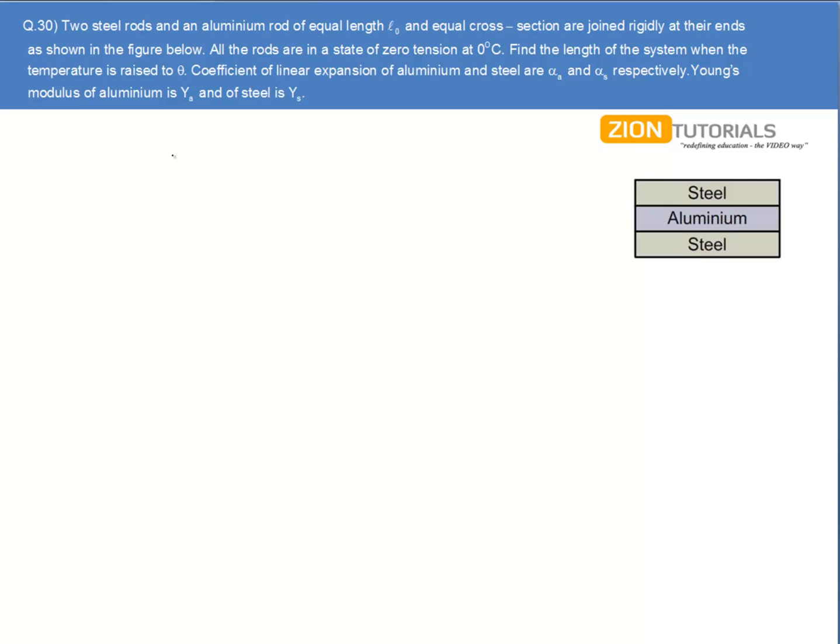Coefficient of linear expansion of aluminum and steel are given, and Young's modulus of aluminum and steel are also given. Now first of all, I have to calculate the final length of the system when the temperature is raised to theta.